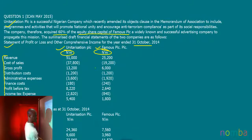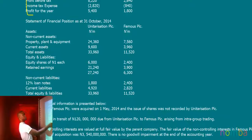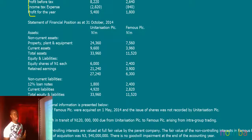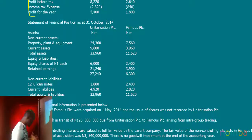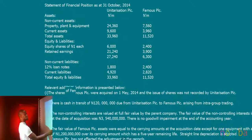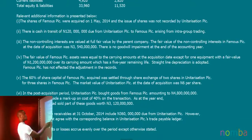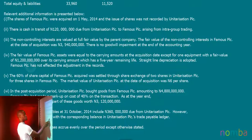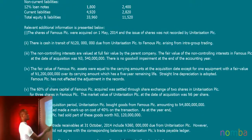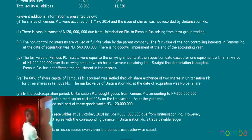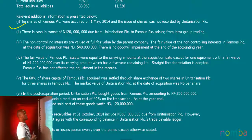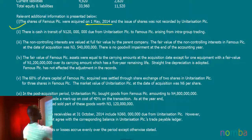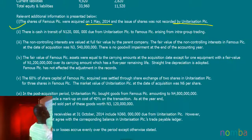We are also given the statement of financial position of Unitarization PLC as well as Famous PLC, comprising assets, equity, and liabilities. Additional information one states that the shares of Famous PLC were acquired on 1st May 2014, and the issue of shares was not recorded by Unitarization PLC.